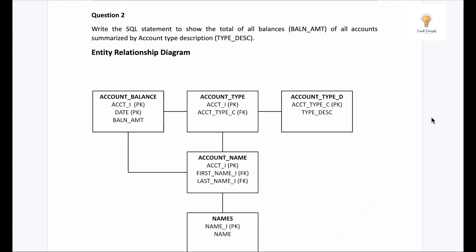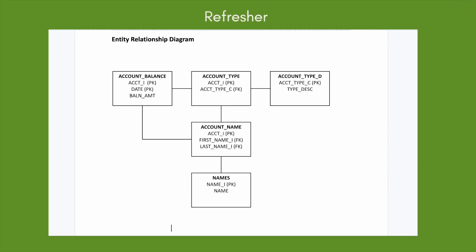Let me give a quick refresher on the tables and entity diagram. There are five tables total: account_balance, account_type, account_type_d, account_name, and names. Lines between tables indicate they are connected via primary key (PK) or foreign key (FK). PK and FK will always be written in brackets next to the column name.